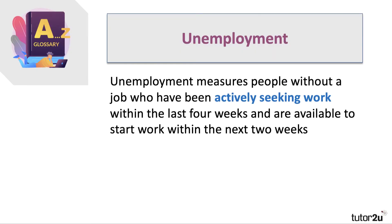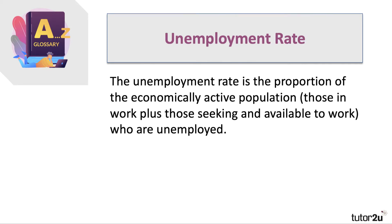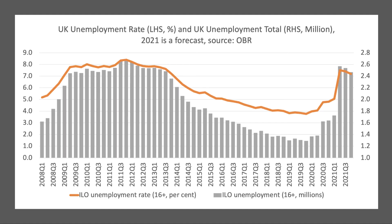The point here is that inflation — though we have a target — is clearly not the dominant macro objective in 2020. Jobs, sustaining growth, rebuilding the economy, and getting through the public health crisis are the key objectives. On jobs: the unemployment rate measures those people who have been actively seeking work within the last month and are available to start work within the next fortnight. The unemployment rate is the percentage of the economically active population who are out of work. The economically active population is those in work plus those actively seeking and available to work.